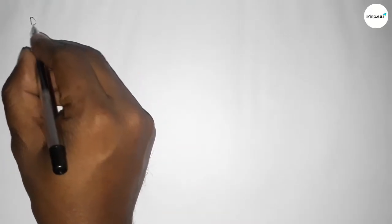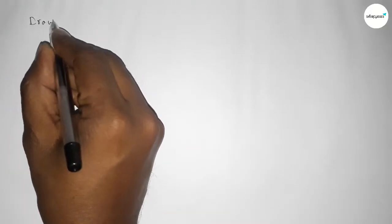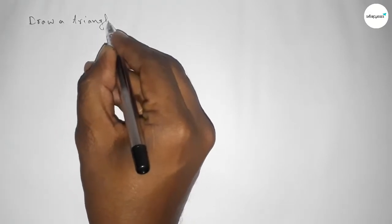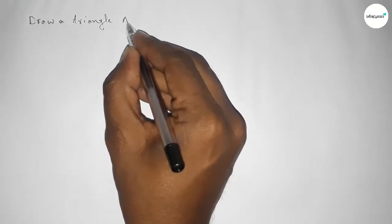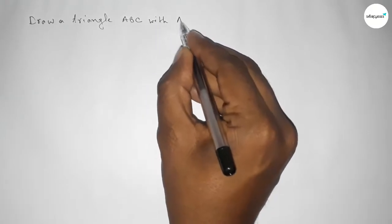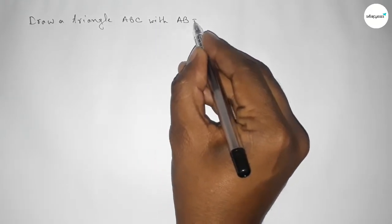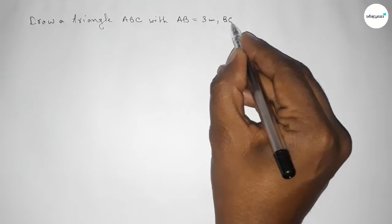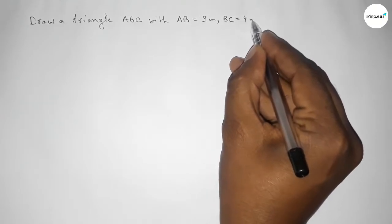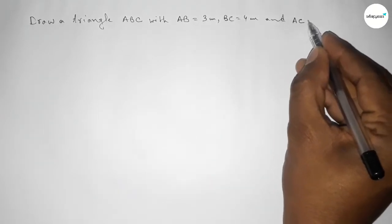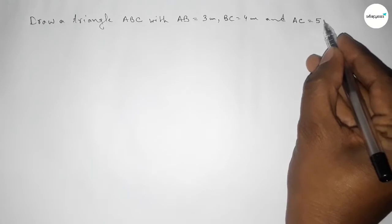Hi everyone, welcome to essay share classes. Today in this video we have to draw a triangle ABC with AB equal to 3 centimeters, BC equal to 4 centimeters, and AC equal to 5 centimeters by using a compass. So let's start the video.